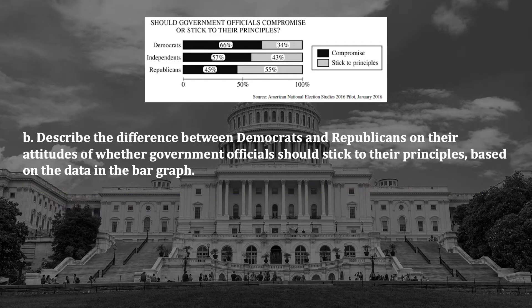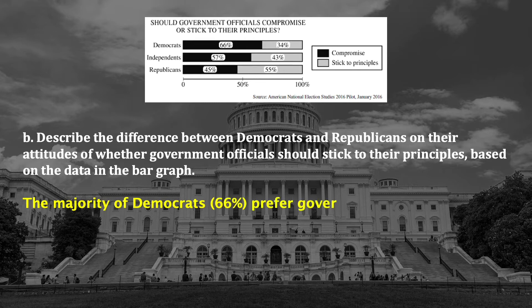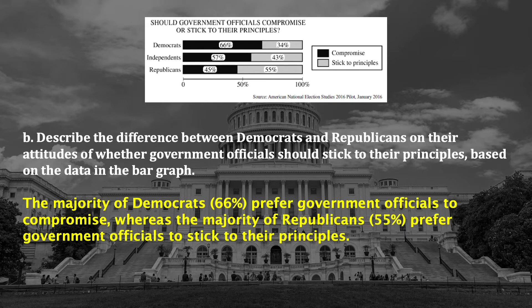Part B is wordy, but it says: Describe the difference between Democrats and Republicans on their attitudes of whether government officials should stick to their principles based on the data in the bar graph. Remember that when you describe something, you need to include details. You just need to make sure you address both the attitudes of Democrats and Republicans. Here's a sample response from College Board that earned the point: 'The majority of Democrats, 66%, prefer government officials to compromise, whereas the majority of Republicans, 55%, prefer government officials to stick to their principles.' Just one sentence, but notice the student used specific data from the bar graph to describe the attitudes of both parties.